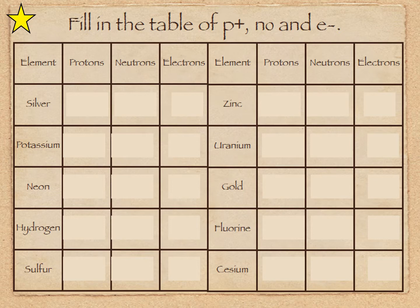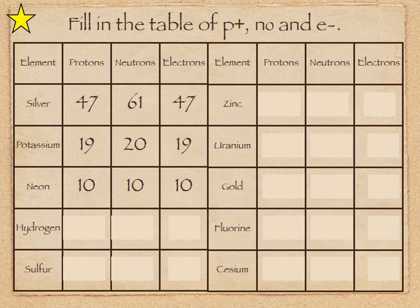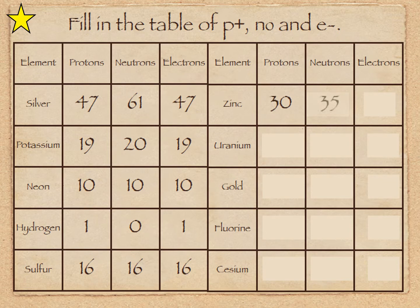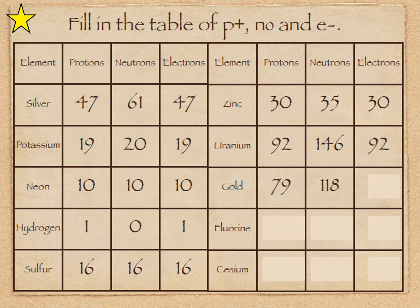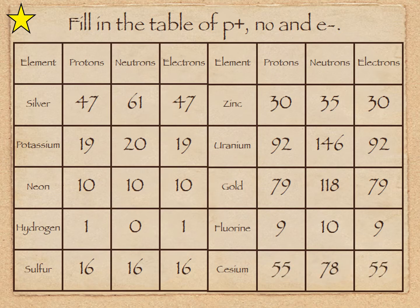You should be able to fill in the table with protons, neutrons, and electrons — they're all neutral. Silver has 47 protons and its mass is roughly 108, so it has 61 neutrons. Neon is 10, so it's 10 all the way around because its atomic mass is close to 20. Hydrogen is 1 with 0 neutrons because the atomic mass of hydrogen is close to 1. Sulfur is 16, 16, 16. Zinc has a mass of 65, so the protons and neutrons are 30 and 35. Uranium has a lot more neutrons. Gold, again, has more neutrons than protons. Electrons are always the same as protons. Fluorine has 10 neutrons and 9 electrons, and cesium is 55, 78, and 55.